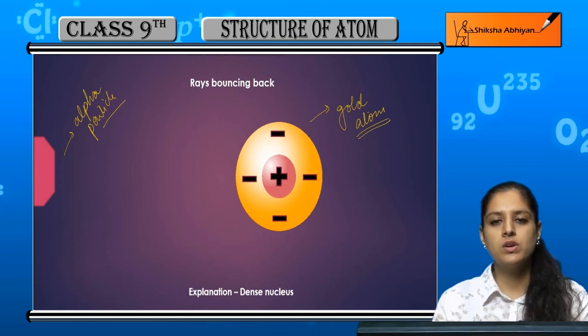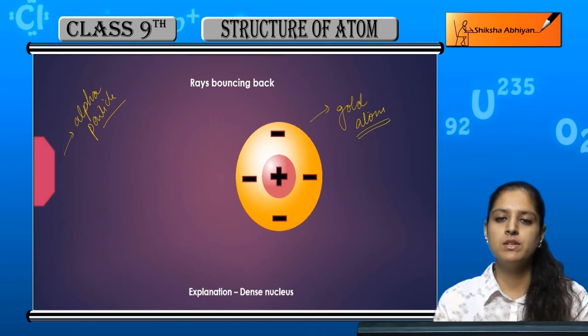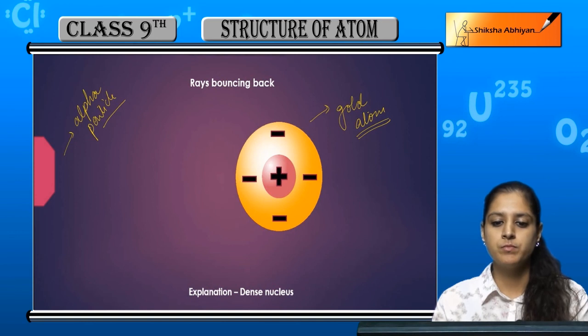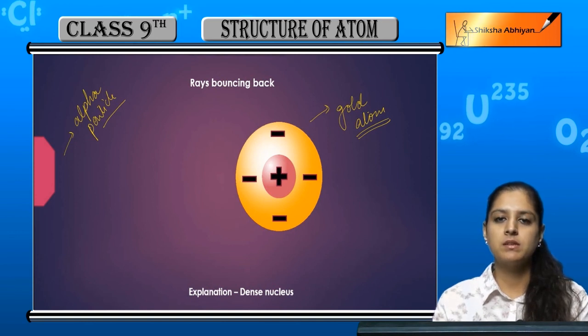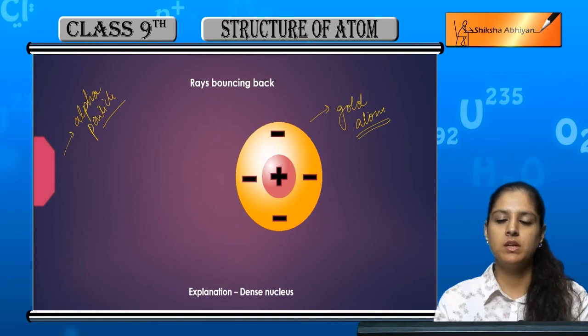The nucleus that is in the center of the atom is positively charged and very dense. So this was the experiment conducted by Rutherford. We will now come to the conclusions of the experiment in the next segment.